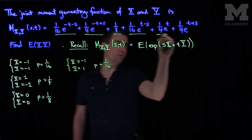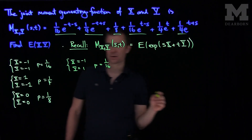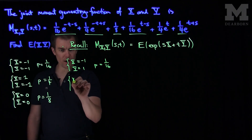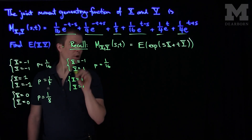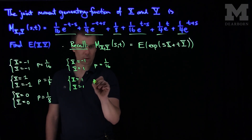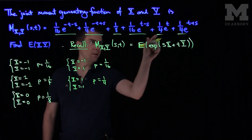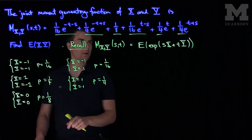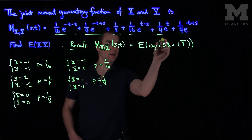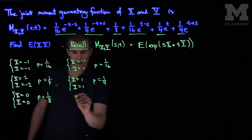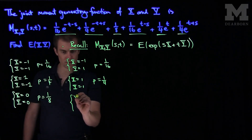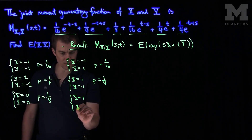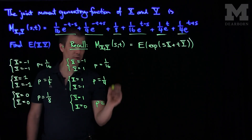Finally, the last term tells us that x equals 1 and y equals 1 with probability 1 fourth. There is also a term where t exists but s does not, meaning y equals 1 and x equals 0, which occurs with probability 1 quarter.